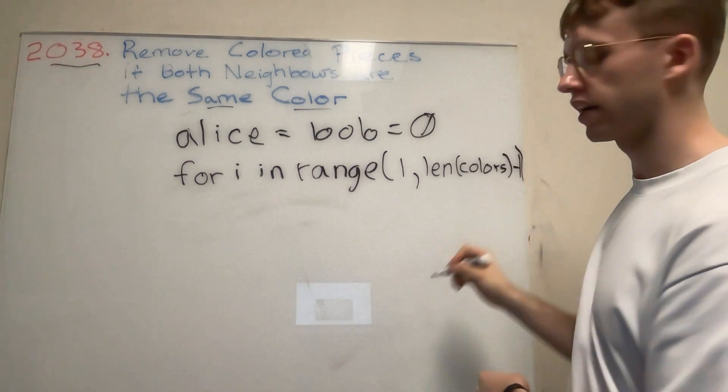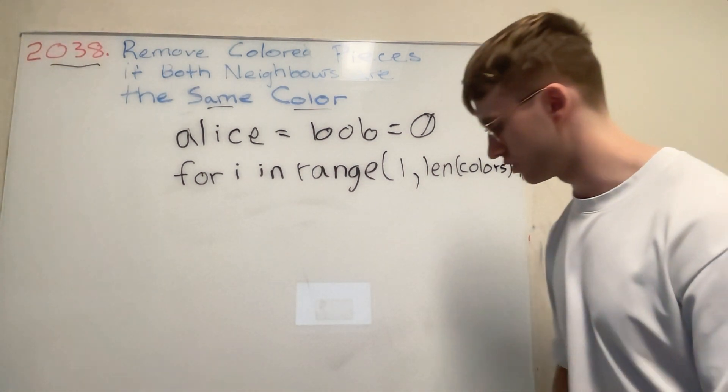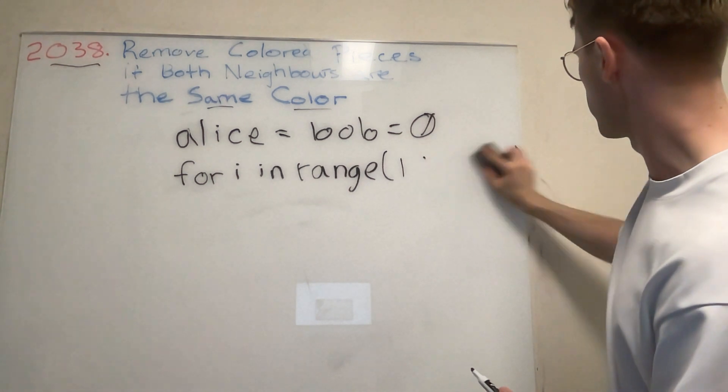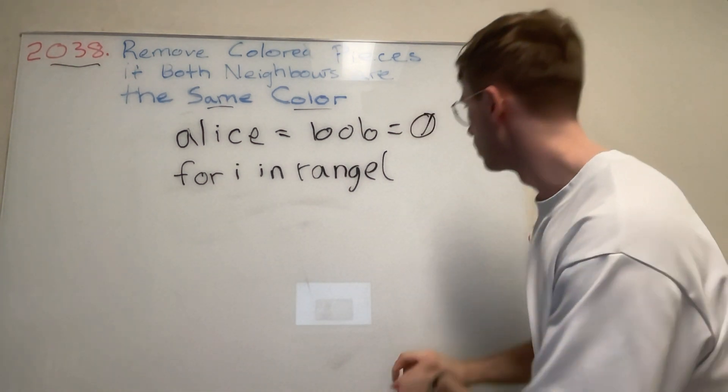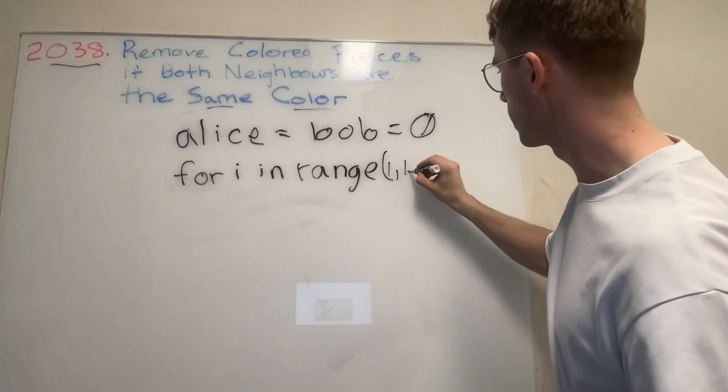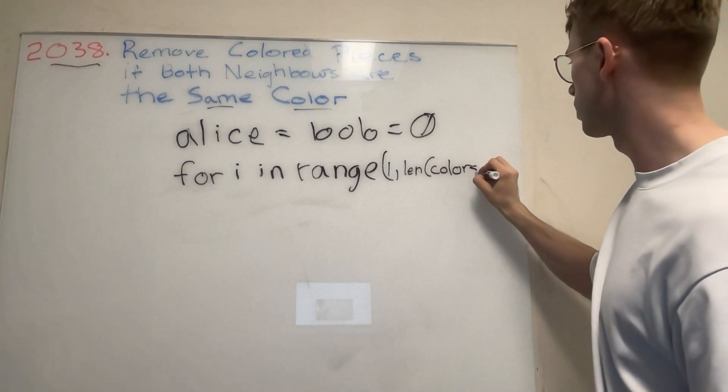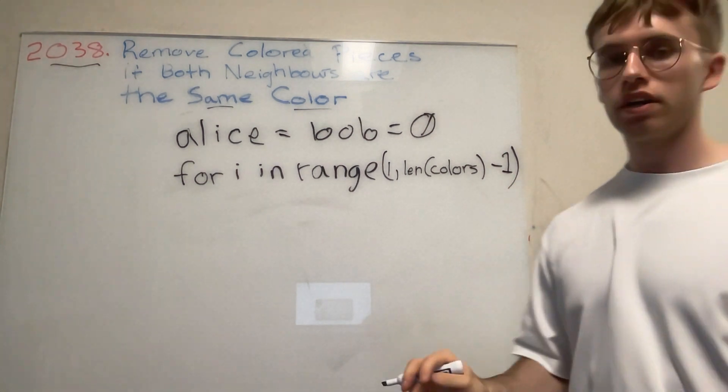Sorry, I went to the very end here. Just to clarify, it's basically the length of our input array minus one. So one to the length of our input array called colors minus one.